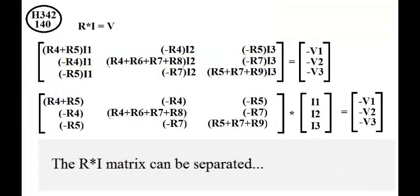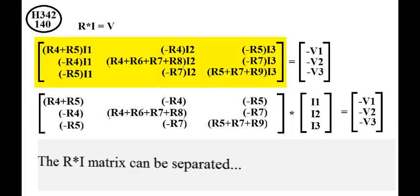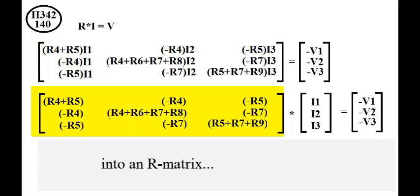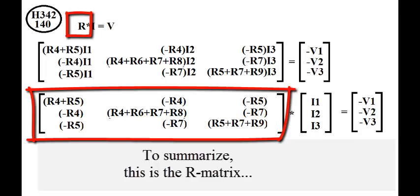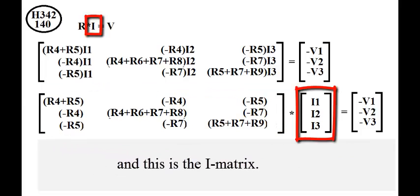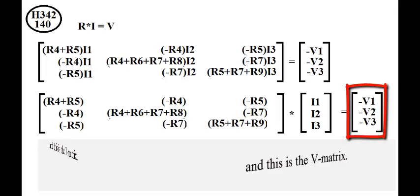The R times I matrix can be separated into the R matrix times an I matrix, or vector. To summarize, this is the R matrix, and this is the I matrix, and this is the V matrix.